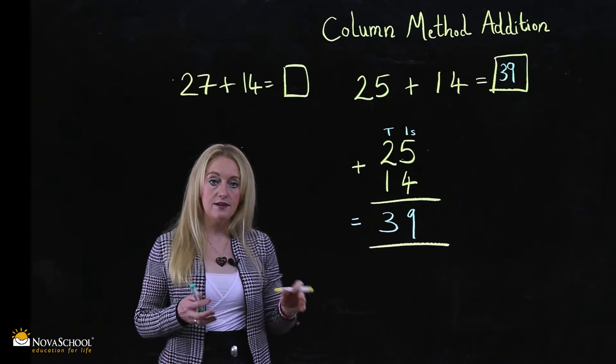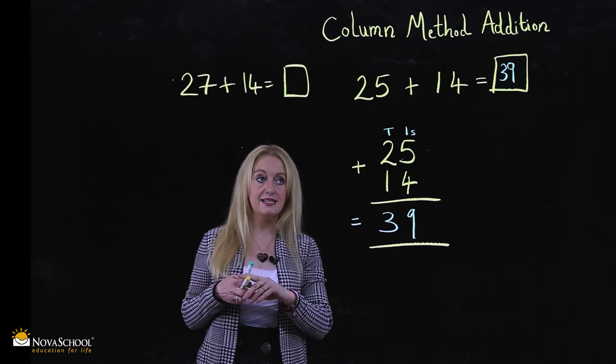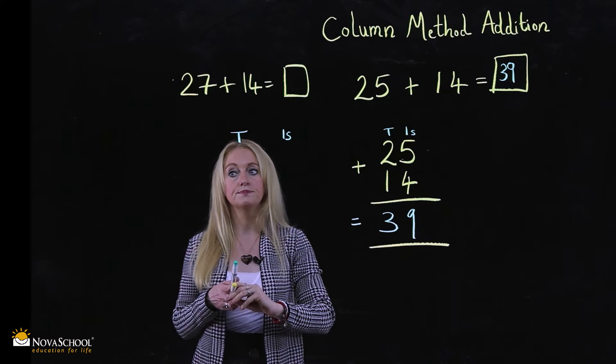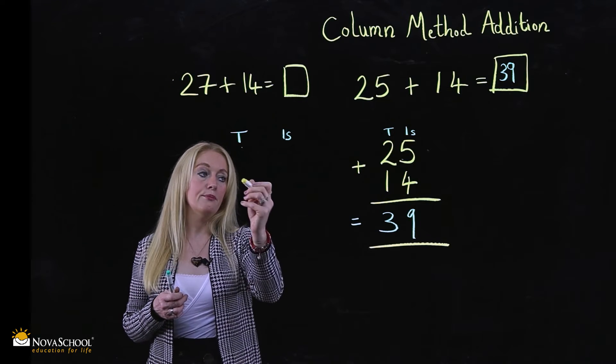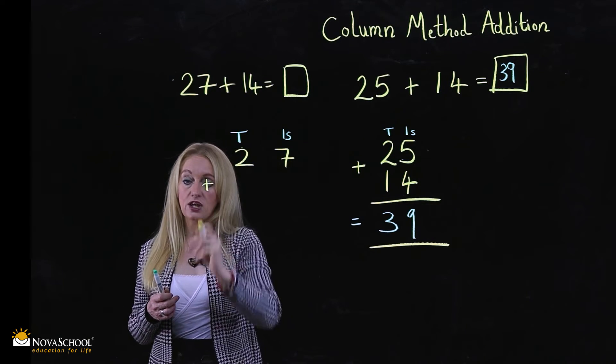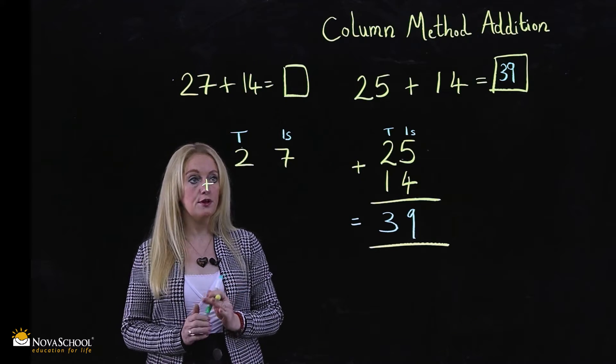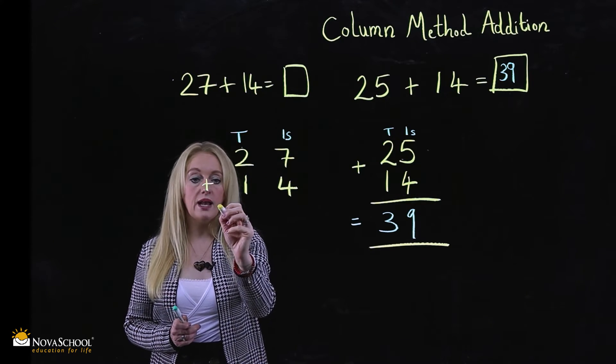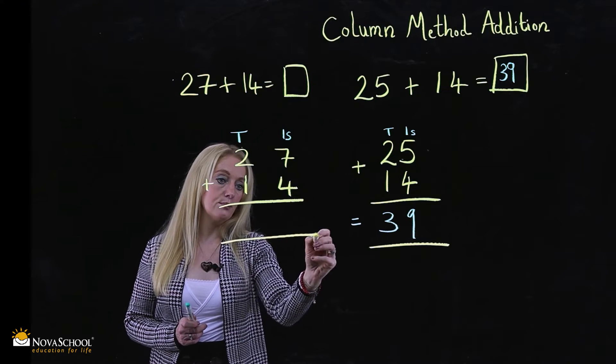Let's have a look at that one. We set it out exactly the same. We have our tens column and our ones column. And we place the numbers. 27 add, don't forget your add sign on the left of the numbers, 14. We use a ruler again to underline the numbers.